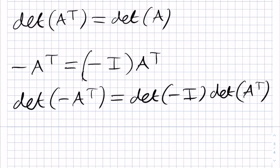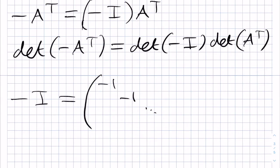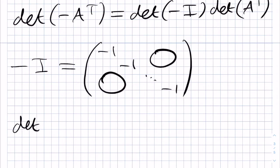We should next calculate the det of minus I, since it is an explicit matrix that we can consider, whereas A is some general antisymmetric matrix. Minus I is the matrix that has minus 1 in each of its diagonal elements, with every other element being zero. There are n minus 1s here because it is an n by n identity matrix, and therefore the determinant of minus I is equal to minus 1 to the power of n.